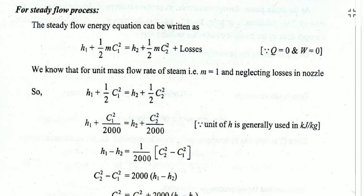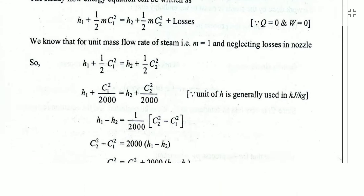We assume steady flow — the flow characteristics do not change with time. Using the steady flow energy equation, since inlet and outlet sections are at the same height, potential energy is not considered. The equation becomes: H1 + C1²/2 = H2 + C2²/2 + losses. When neglecting losses, we derive the formula for C2.